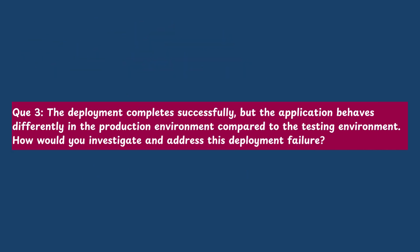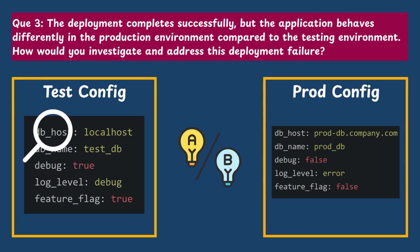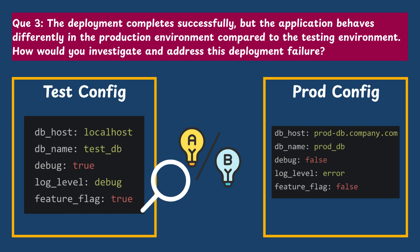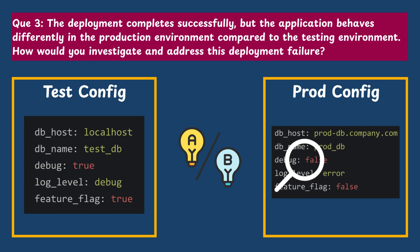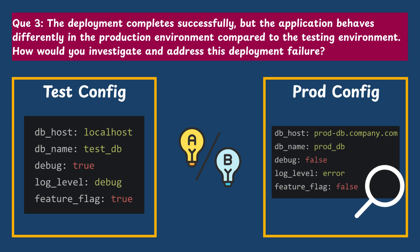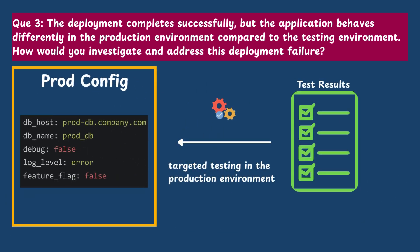Question 3: The deployment completes successfully but the application behaves differently in the production environment compared to the testing environment. How would you investigate and address this? First, I would compare the configuration settings and environmental variables between the testing and production environments to identify any discrepancies. Then I would review the deployment process to ensure all necessary configurations and dependencies are properly set up, and if needed perform targeted testing in production to replicate and troubleshoot the issue further.